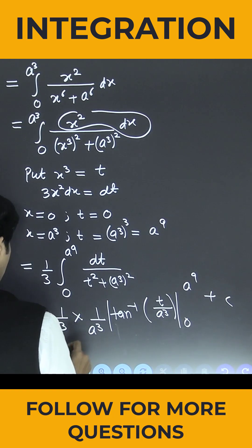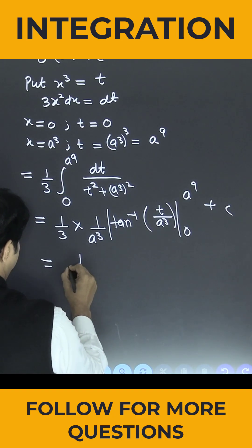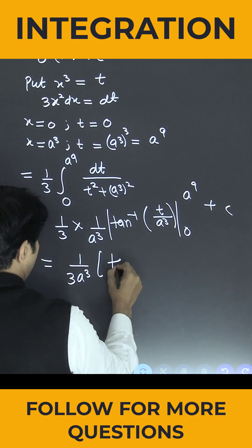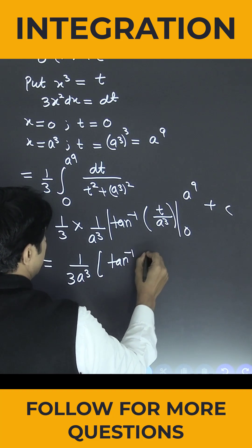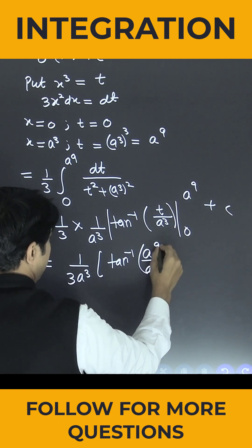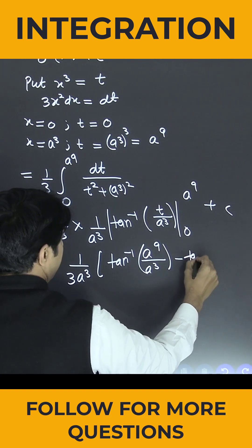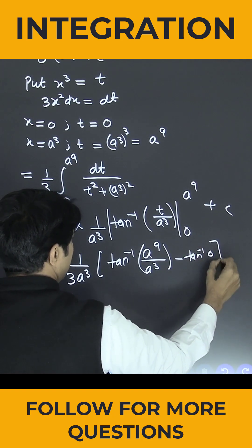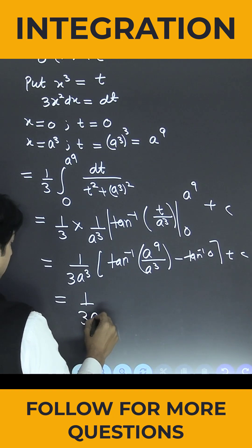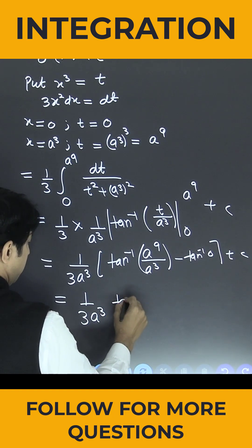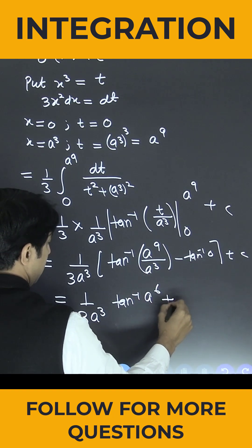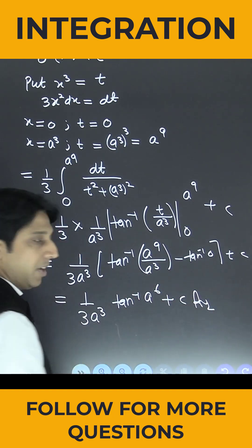So this comes out to be equal to 1/(3a³). Putting the upper limit, it becomes tan inverse of a⁹/a³ minus tan inverse of 0, which is 0. The final answer is 1/(3a³) times tan inverse of a⁶, plus c. Thank you.